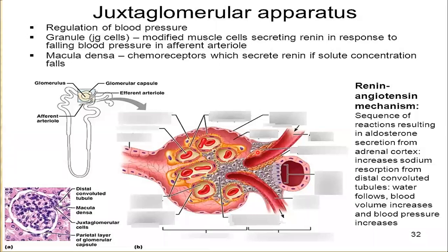These are modified smooth muscles, which we call juxtaglomerular cells. Some cells are enlarged and in the columnar form, which we call macula densa.